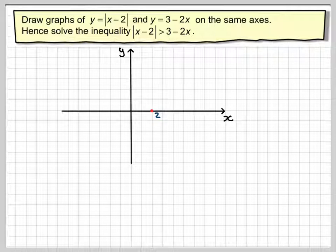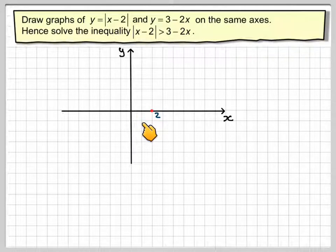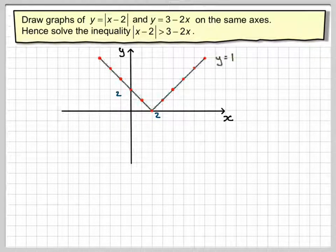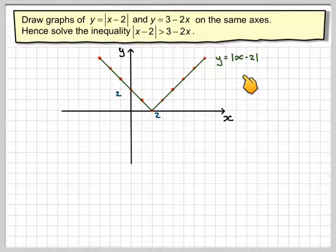And then for minus 2, for every one along goes one up, every one along goes one up, so the next point will be there, there, and that will continue in that direction. This one will get reflected to here, this one will get reflected to here, and so on like that. So here we get the graph of y equals the absolute value of x minus 2.